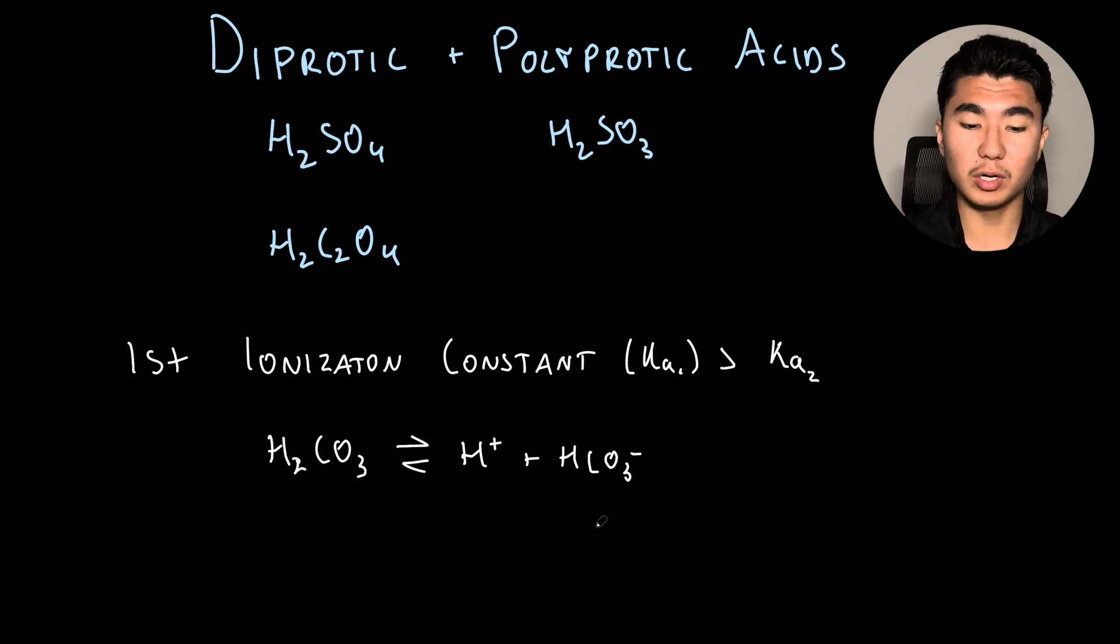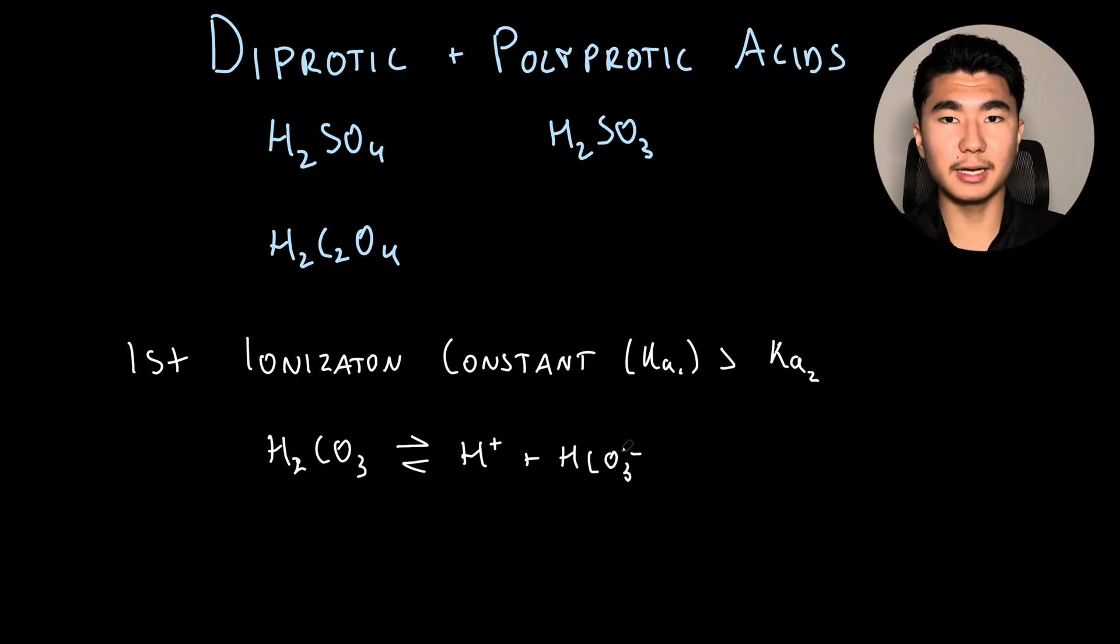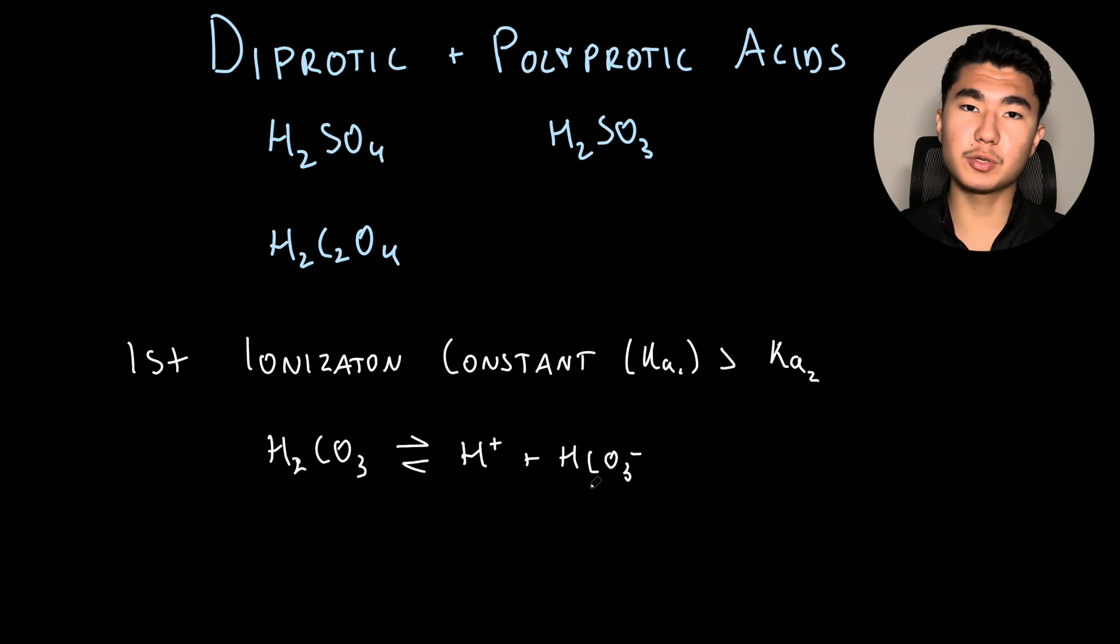Now if we have HCO3-, it's going to be harder to remove that hydrogen, especially since we're in a charged state, a negative state. It's harder to pull away that hydrogen, which is why the second ionization constant KA2 will be lower than the first, because it's harder to pull that hydrogen away from a charged species.